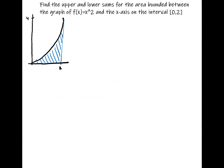The first thing we have to do is come up with expressions for the base and the height of the rectangles we're going to be using. We're going to be using upper and lower sums. In this case, the lower sums will come from rectangles where we're using left endpoints. So we need an expression for lowercase m sub i. And upper sums look like they're coming from right endpoints, because those rectangles go above the graph.